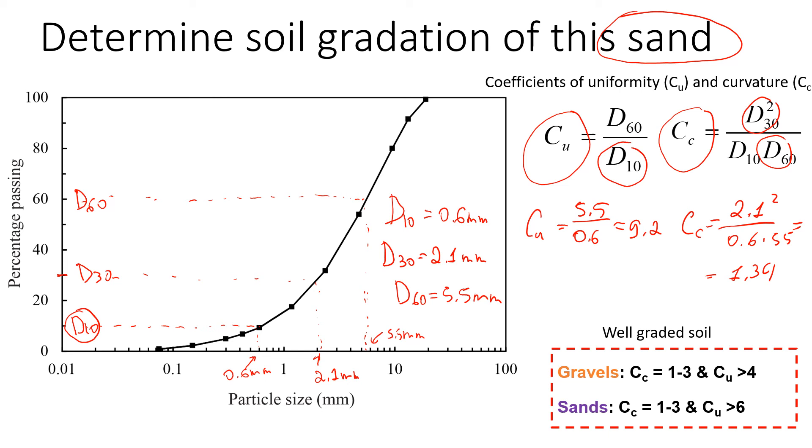Now we're going to look at these two coefficients and look at the criteria for well-graded soil. We know that it is sand, so we're going to look at this criteria. For this soil to be well graded, the coefficient of curvature needs to be in the range from 1 to 3, and in our case, it is 1.34, so yes, it's in the range. The coefficient of uniformity should be more than 6, and in our case it's 9.2, so yes.